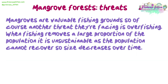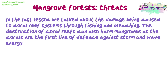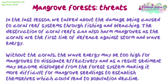Mangroves are valuable fishing grounds, so another threat they face is overfishing. When fishing removes a large proportion of the population, it is unsustainable as the population cannot recover, so the size decreases over time, leading to a reduced gene pool and a population more vulnerable to changes in biotic and abiotic factors. The destruction of coral reefs can also harm mangroves, as corals are the first line of defence against storm and wave energy. Without the corals, wave energy may be too high for mangroves to dissipate effectively, causing sediment to become dislodged and making it more difficult for mangrove seedlings to establish themselves, which could lead to population decline.